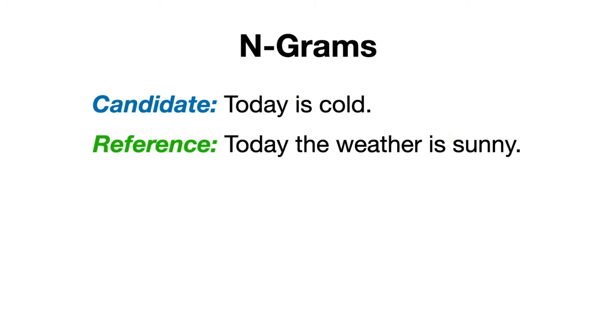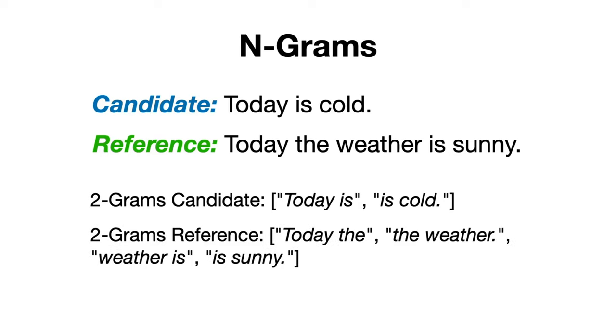Furthermore, we can extrapolate this logic and switch to n-grams, which are continuous sequences of n-words from a given sample of text. In our first example, if we consider bigrams, or sequences of two words, we would have 'today is' and 'is cold' as our predicted bigrams, and 'today the,' 'the weather,'...